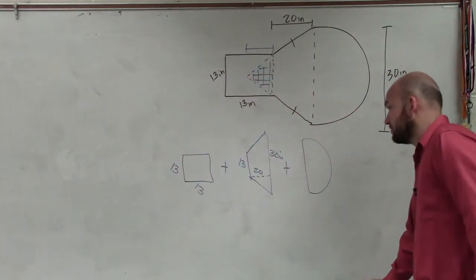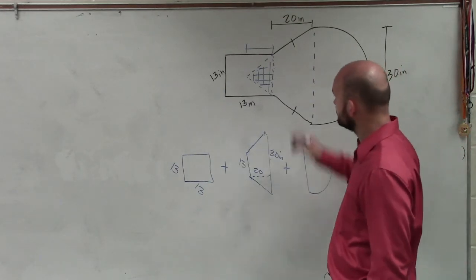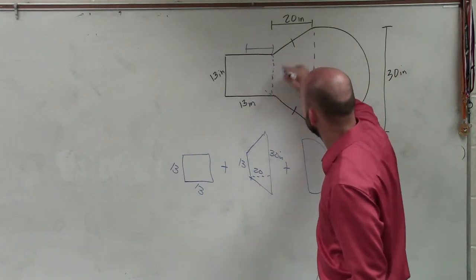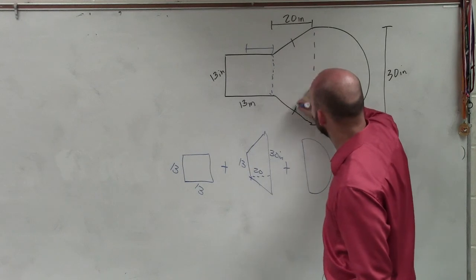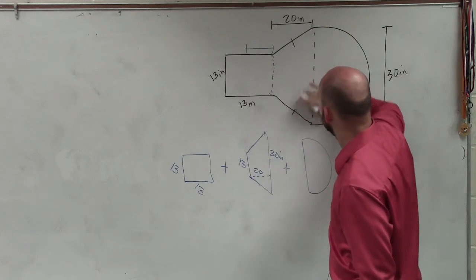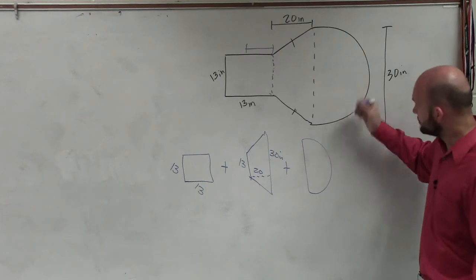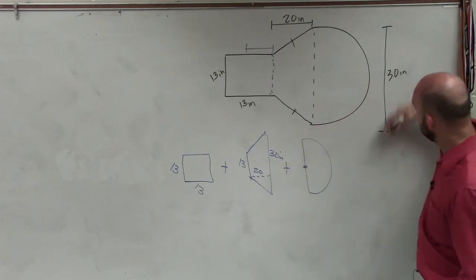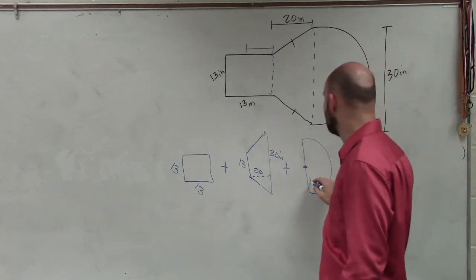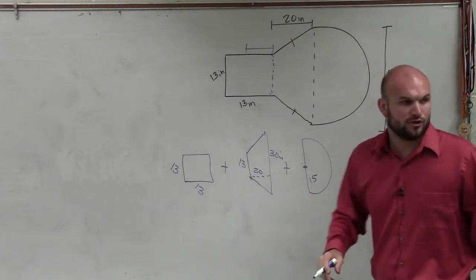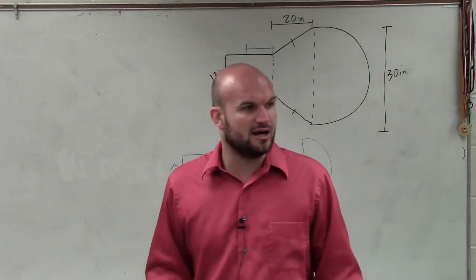Then let's go and look at the semicircle. And then we have a semicircle. Well, if here's the center, if this hole is 13, then we know the radius is 15. And if we know the radius of a circle, can we find the area of it? Yeah.